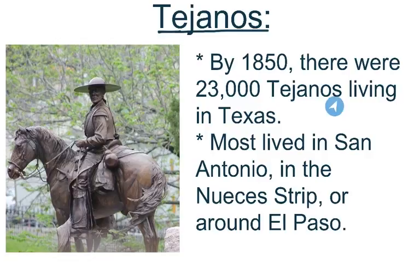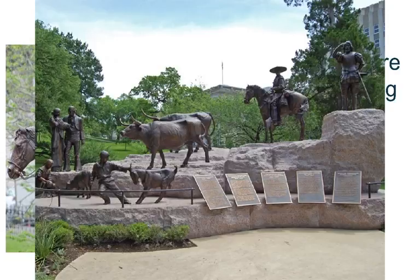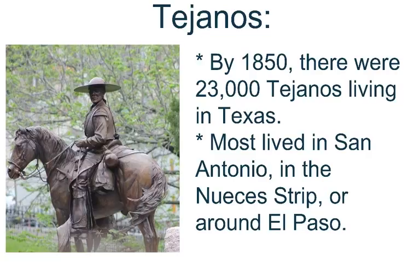Next, we're going to talk about the Tejanos. By 1850, there were 23,000 Tejanos living in Texas. A Tejano was a Mexican-born person who came together with someone from Texas. This statue, located in Austin, was placed to represent all the Tejanos that have come through the state of Texas.